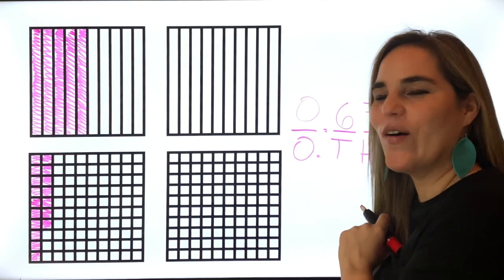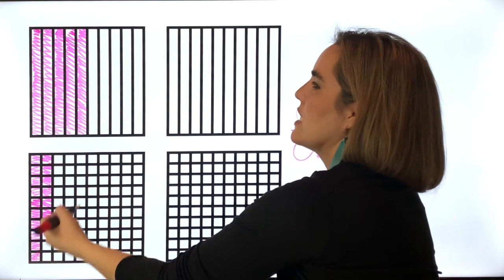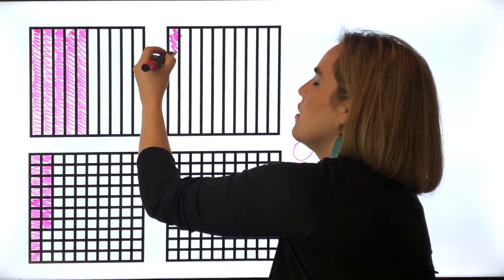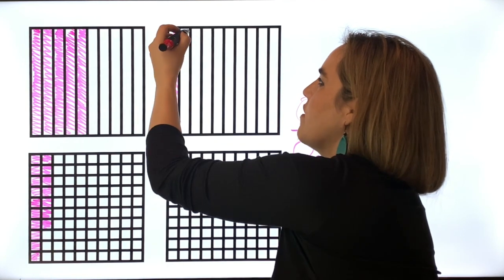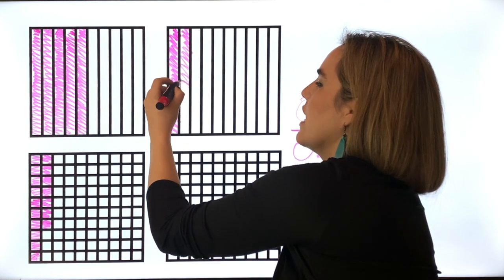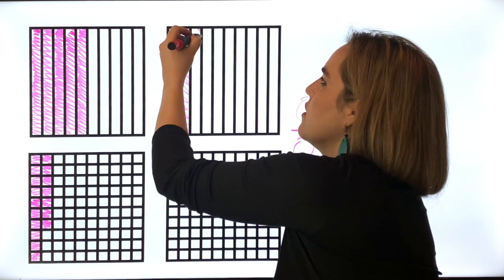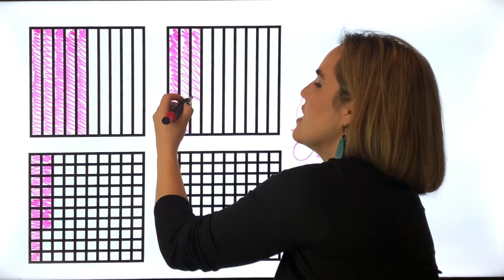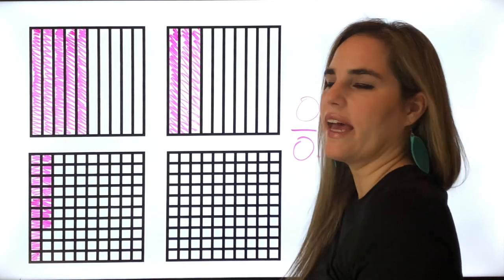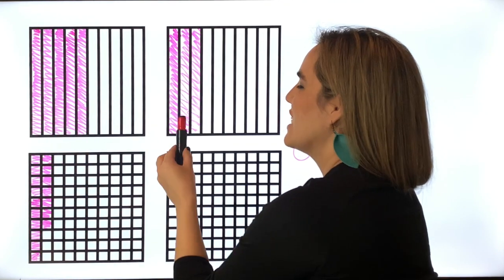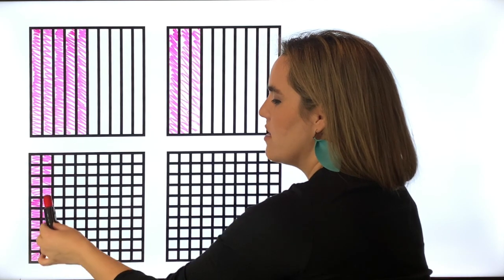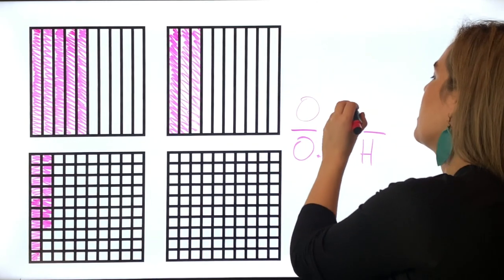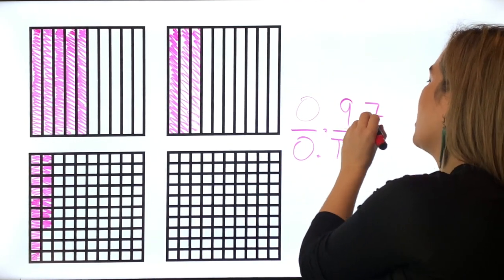We're getting closer to one whole. We had sixty-seven, seventy-seven, seventy-seven, eighty-seven, ninety-seven. Why? Ten, twenty, thirty, forty, fifty, sixty, seventy, eighty, ninety, ninety-seven. This is ninety-seven hundreds.